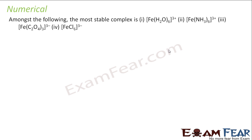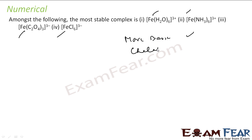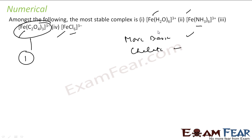Now we arrange complexes in order of most stable. All are iron complexes — the only difference is the ligands. The rule is: more basic the ligand, more stable the complex. Also, chelating ligands give greater stability due to the chelate effect. So if there is a chelating ligand present, that complex is most stable. Among the remaining, compare basicity — for example, ammonia is more basic than chlorine. The chelating agent gives the most stable complex; after that, stability is based on the basic nature of the ligand, not merely on whether it is a weak or strong field ligand.